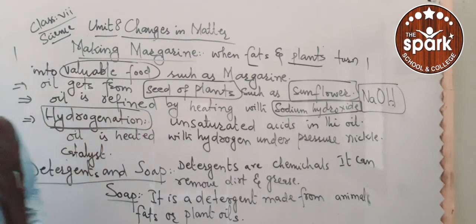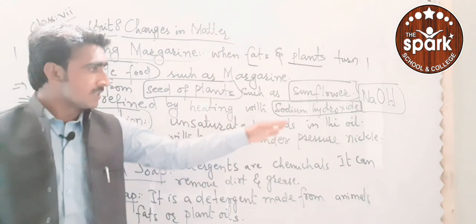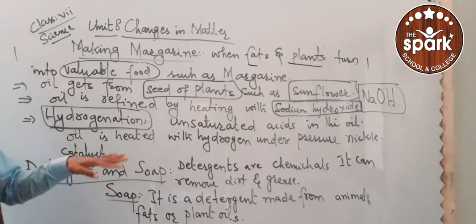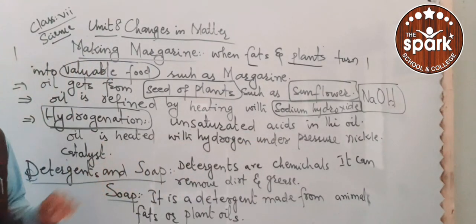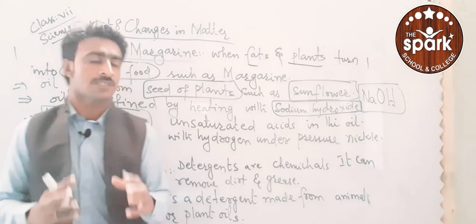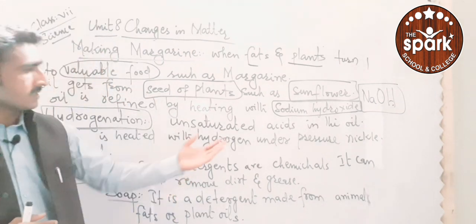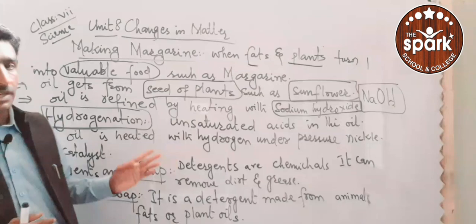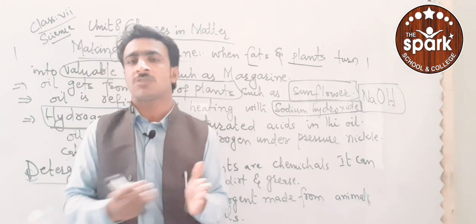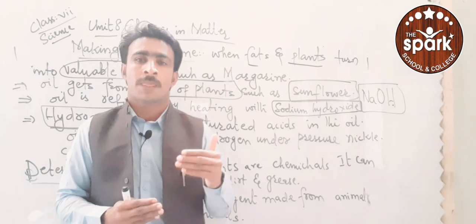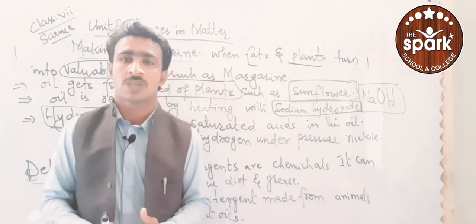Hydrogenation: there are unsaturated acids in the oil. The oil is heated with hydrogen under pressure using a nickel catalyst. Nickel acts as a catalyst — a catalyst is an element that helps speed up any reaction. So through this hydrogenation process, the unsaturated acids in the oil are converted.